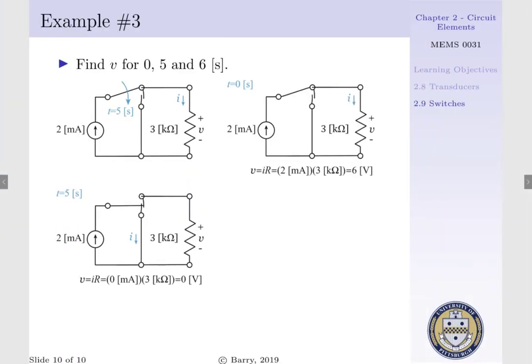Now, when T equals 5 seconds, this is when our switch is activated, and the switch is now making a connection between the terminal that's connected to our 3 kilo-ohm resistor and the terminal that's connected to our short circuit.